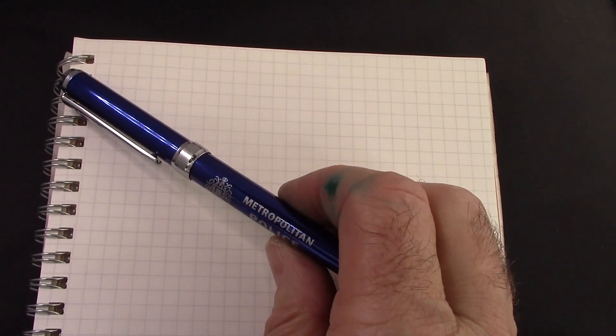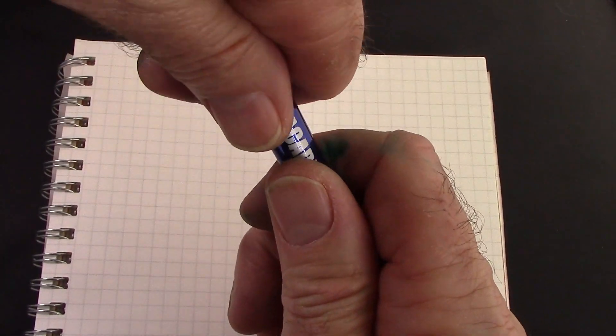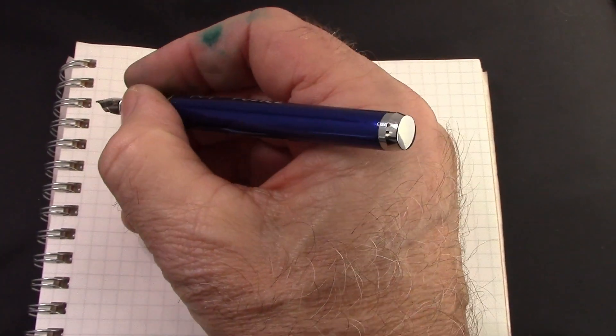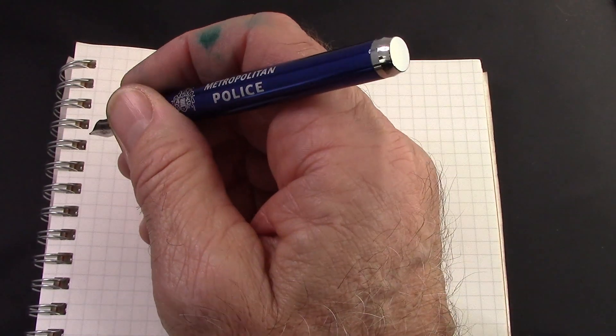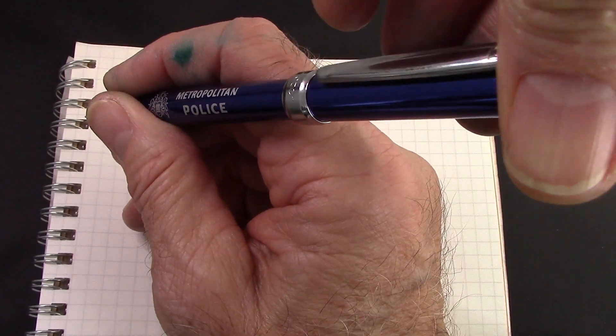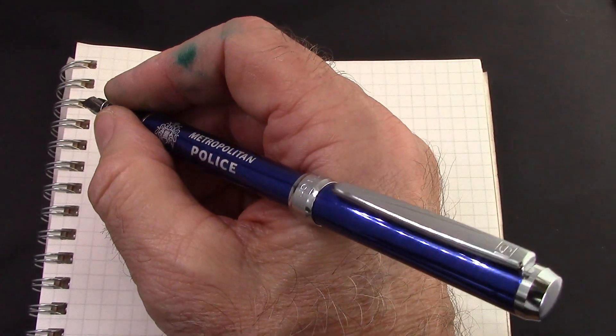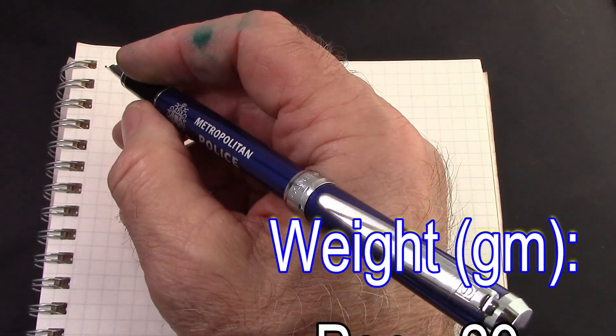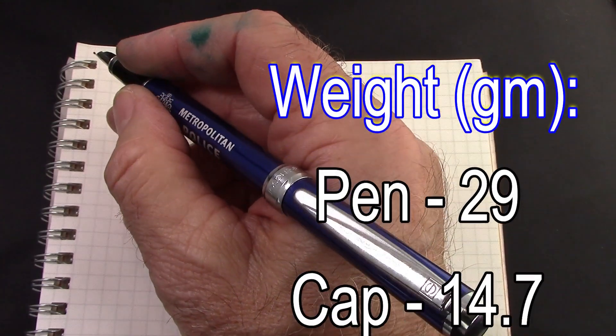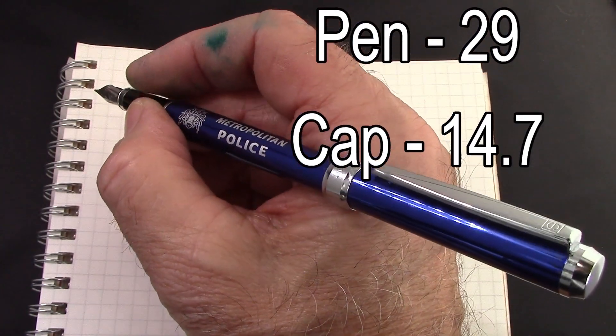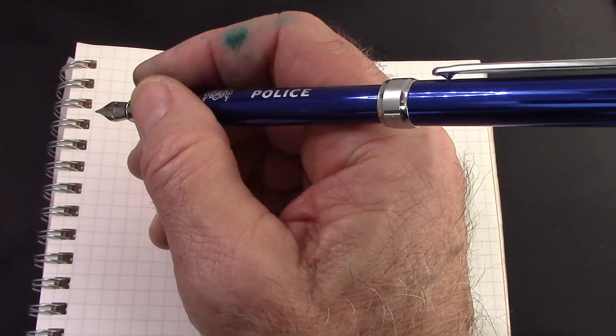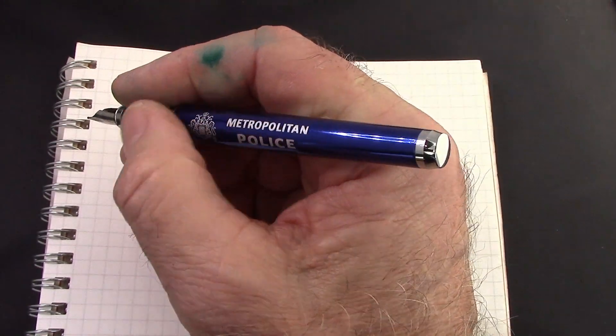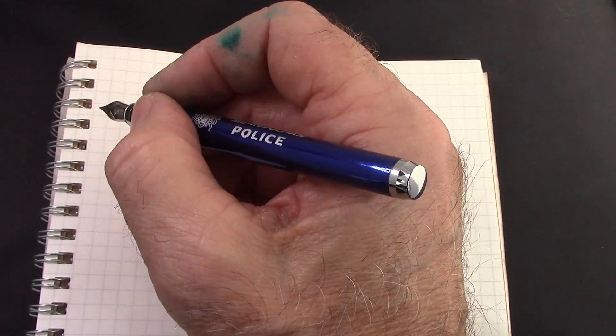This pen is pretty long. So to me I would probably always use this unposted. But as we mentioned it does post and it posts securely, there's a nice cap liner inside of the cap. But that cap is half the weight of the pen and it certainly back-weights it, so it's not going to make for a comfortable writing experience, at least from my perspective.